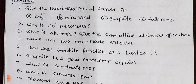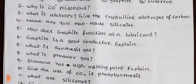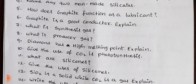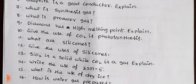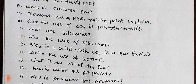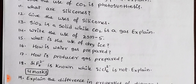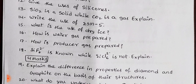The 2-mark questions for 14th group elements include: What is the hybridization of carbon in carbonate, diamond, graphite, and fullerenes? How does graphite function as a lubricant? Graphite is a good conductor — explain. What is synthesis gas? What is producer gas? Diamond has a high melting point — explain. Give the uses of CO2 in photosynthesis. What are silicones? Give the uses of silicones. Silica is a solid while CO2 is a gas — explain. Write the use of ZSM-5. What is the use of dry ice? How is water gas prepared? How is producer gas prepared? SiF6 2- is known while SiCl6 2- is not — explain.